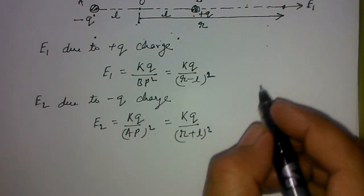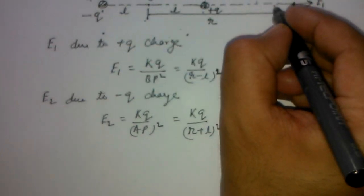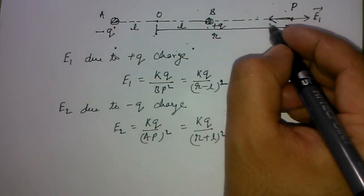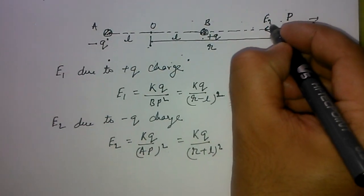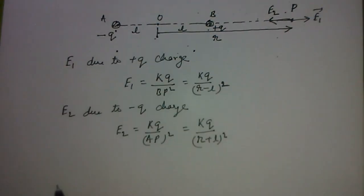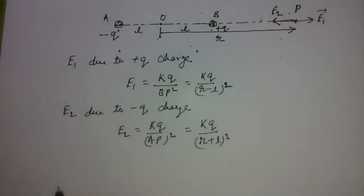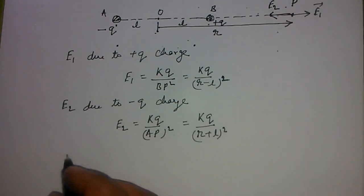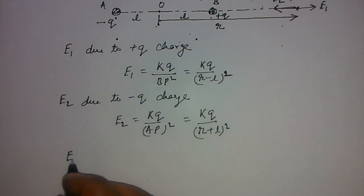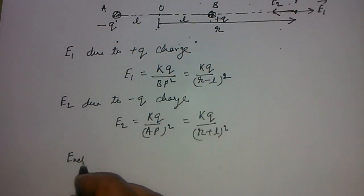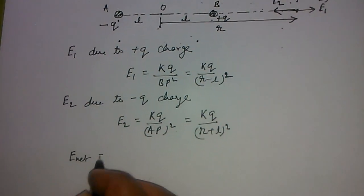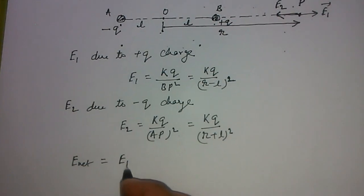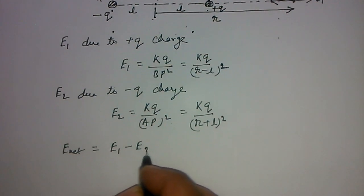The direction of E2 is attractive — since the charge is negative, this field will be directed towards the negative charge. Now the net electric field E_net equals E1 minus E2, because the two vectors have opposite directions.